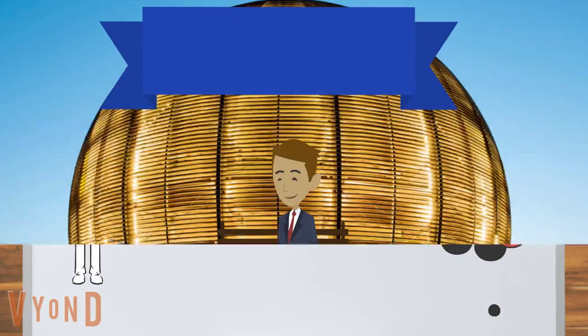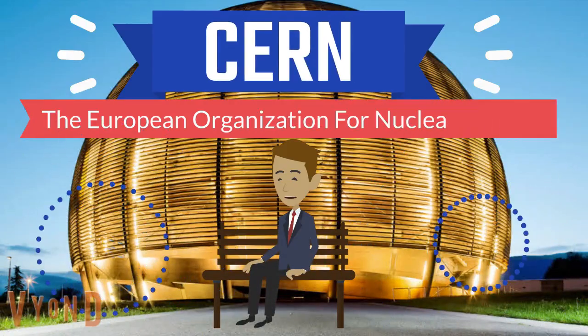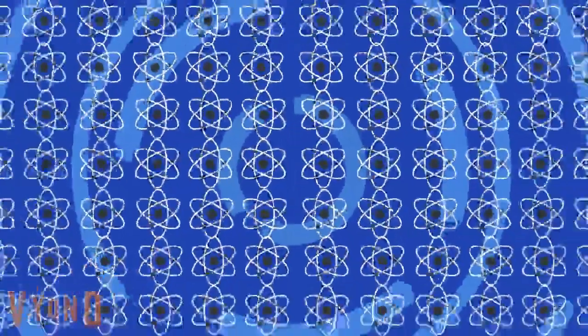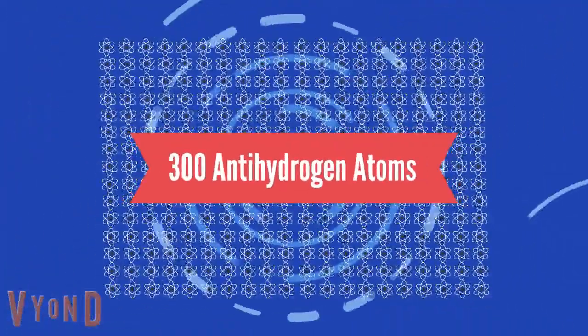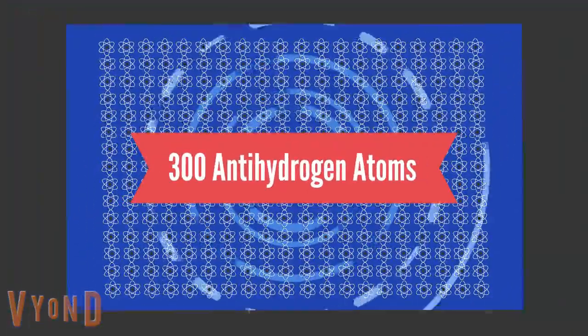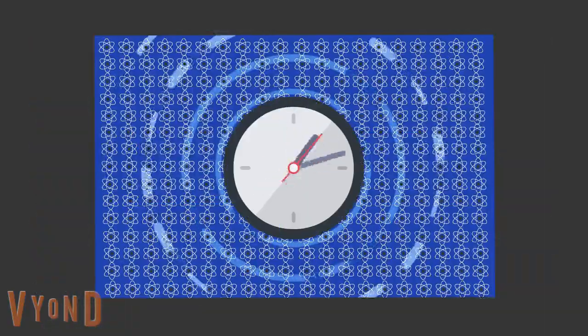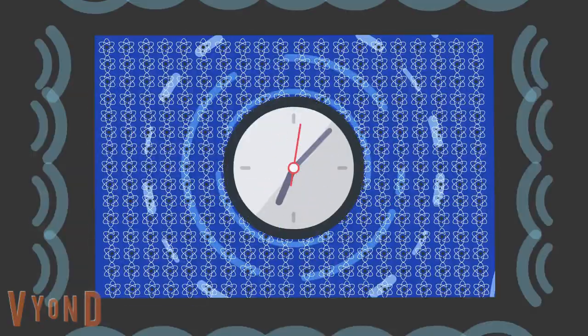In fact, at CERN, the European Organization for Nuclear Research, they created 300 anti-hydrogen atoms that they then contained with electromagnetic traps for over 16 minutes.